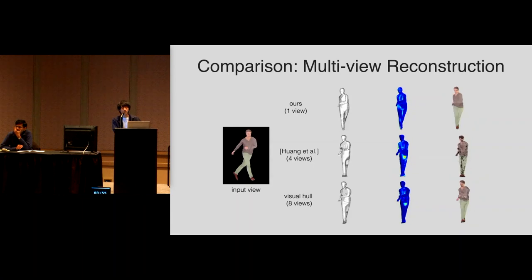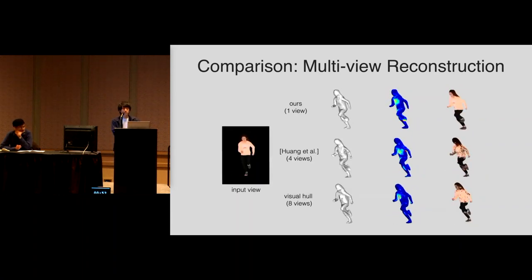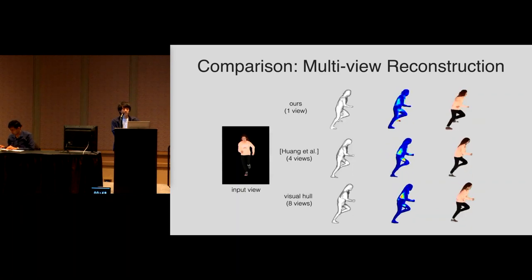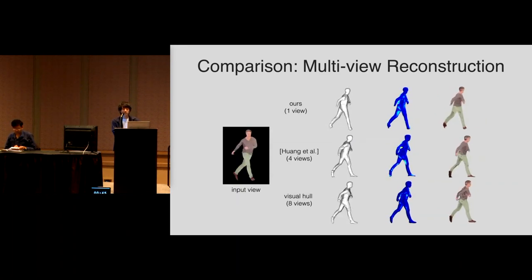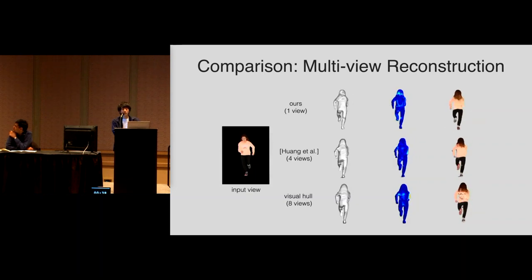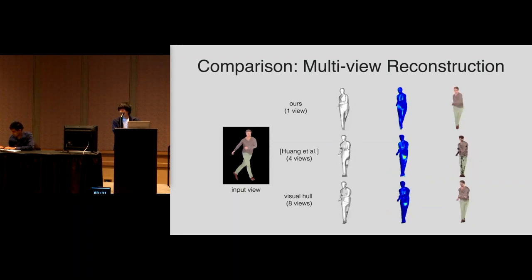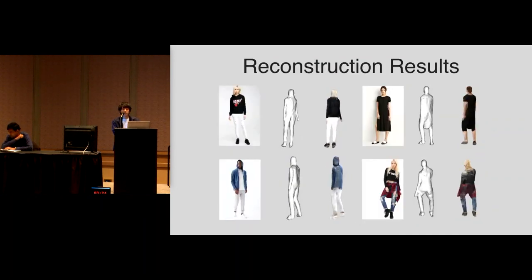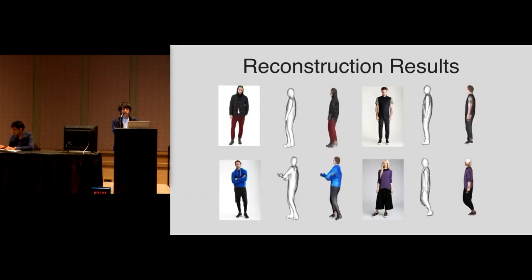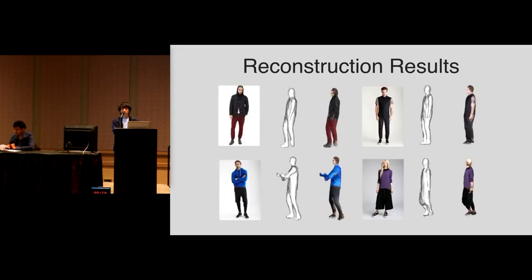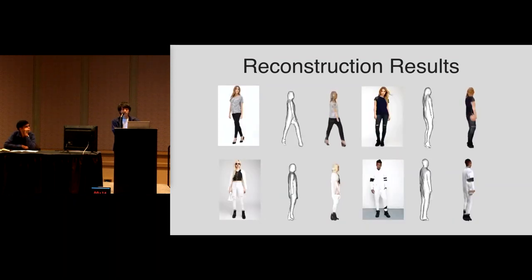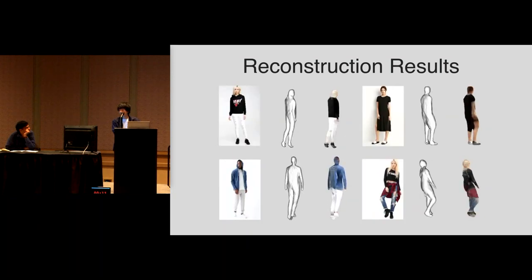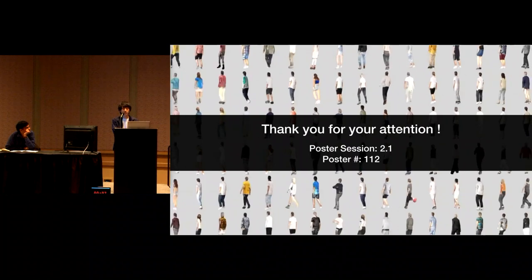We compare our method with state-of-the-art four-view reconstruction and eight-view visual hull algorithms. Although using only a single image, we achieve comparable reconstructions, and importantly we infer both geometry and textures, while existing methods do not provide missing textures. Our reconstruction results on internet photos from the DeepFashion dataset show we can reconstruct clothed human body shapes with plausible complex textures from a single image.